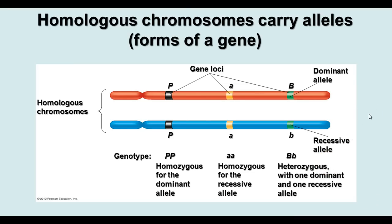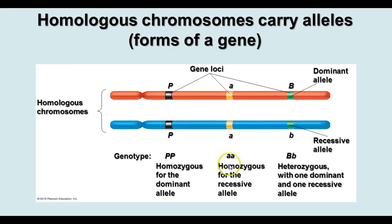Chromosomes occur in pairs, and they form what we call homologous pairs. Homologous means that you have the same genes for the same traits in the same locations. Here we have an allele — the form of a gene — present in two chromosomes, one from mom and one from dad. They can be homozygous dominant, homozygous recessive, or heterozygous, where one allele is dominant and one is recessive.